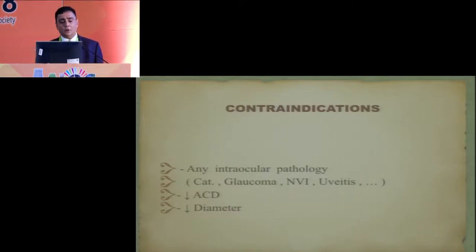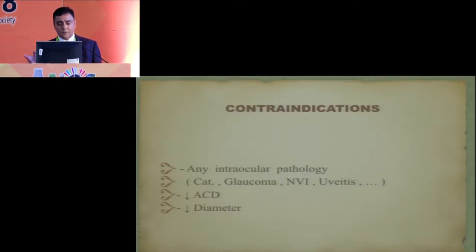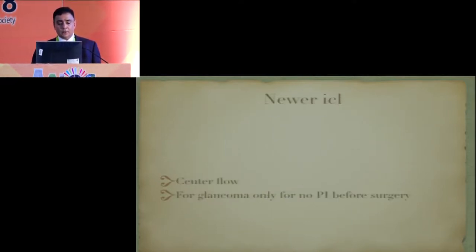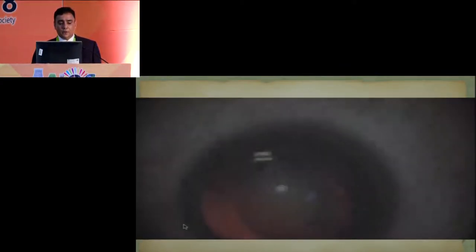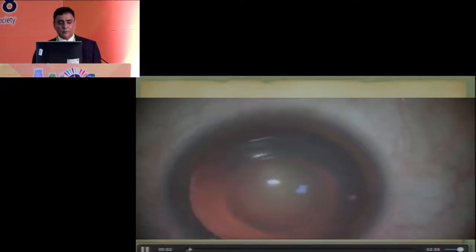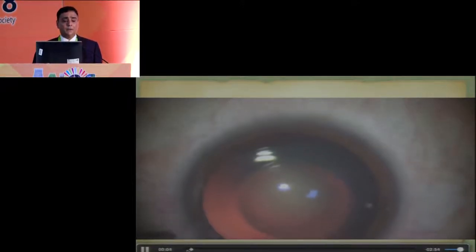Contraindications for ICL: if the anterior chamber is very shallow, it's not possible. Other contraindications include cataract and glaucoma. Spontaneous rotation of ICL is known. New ICLs have a central flow. Here is one video of a toric ICL — this patient has developed a cataract and we will show the removal.